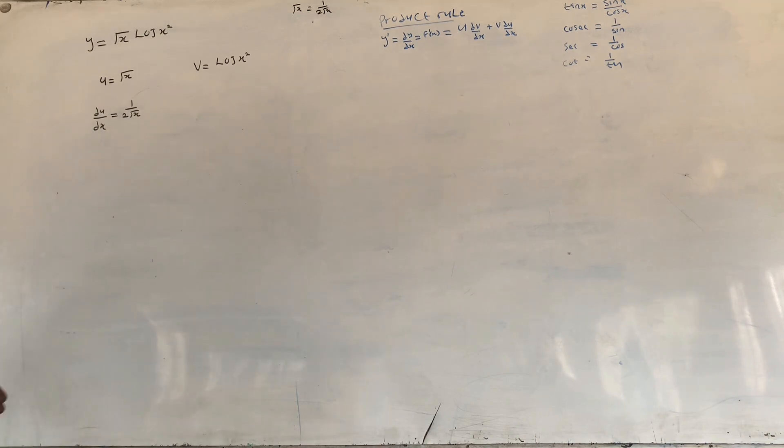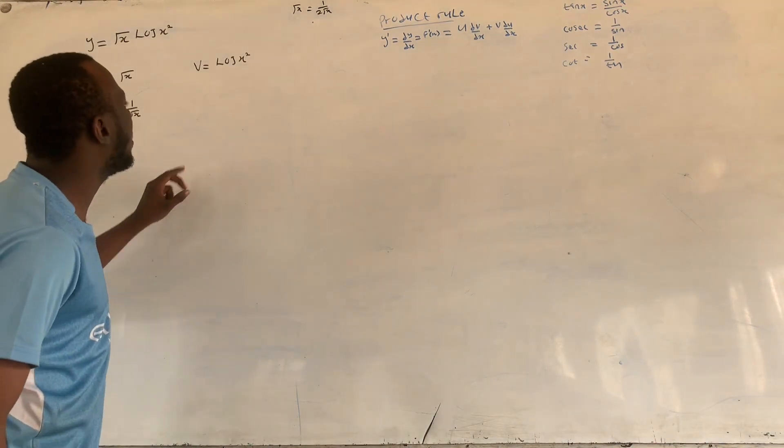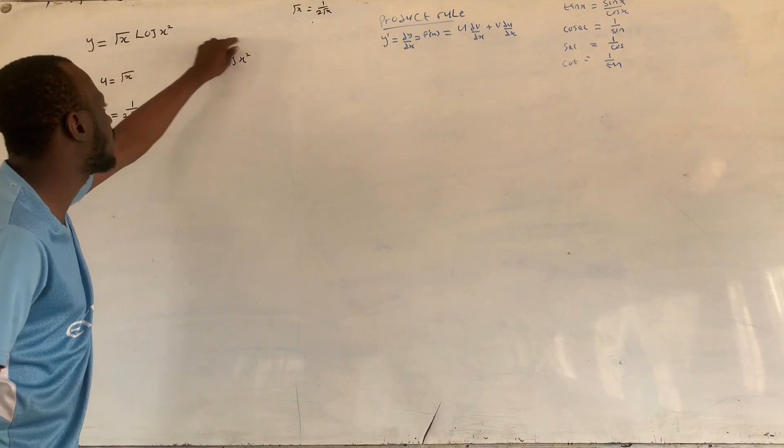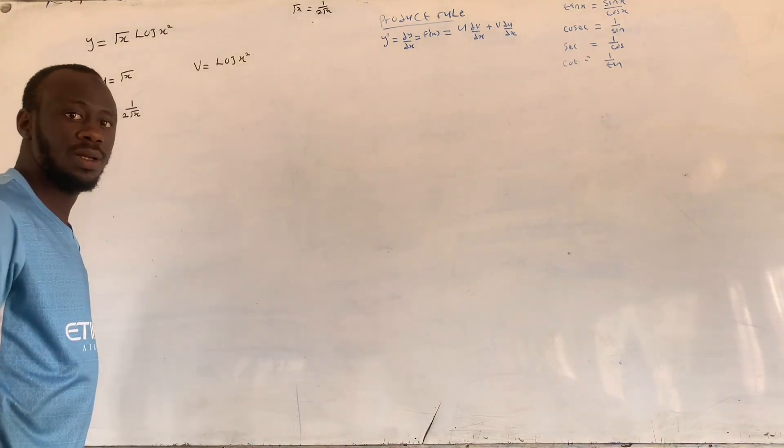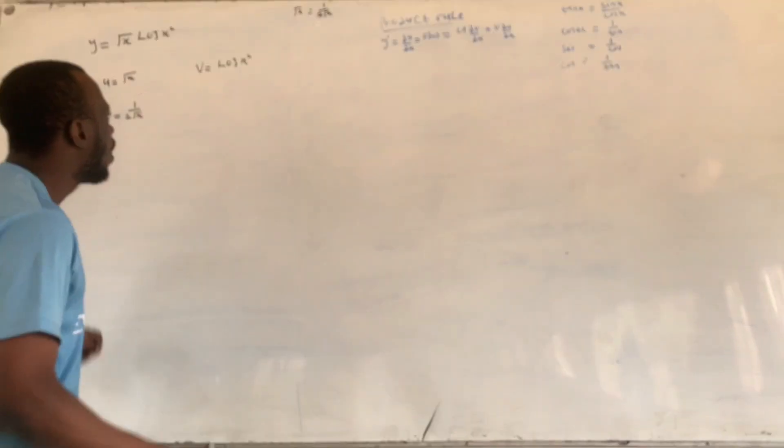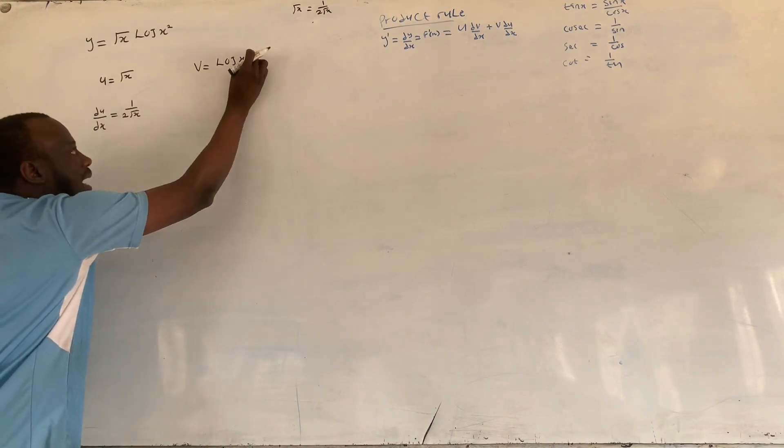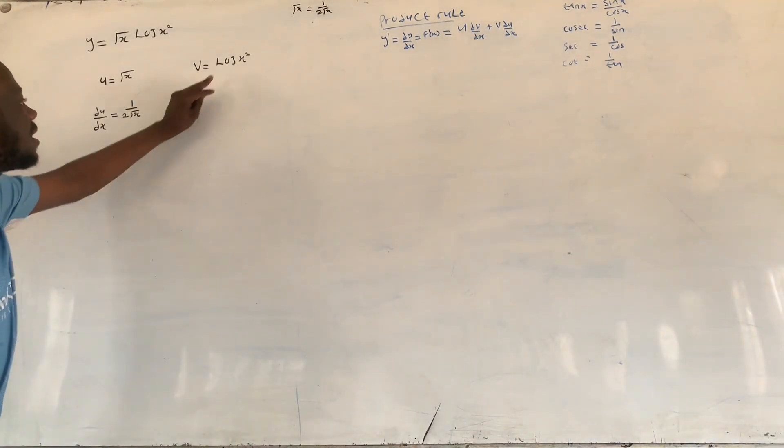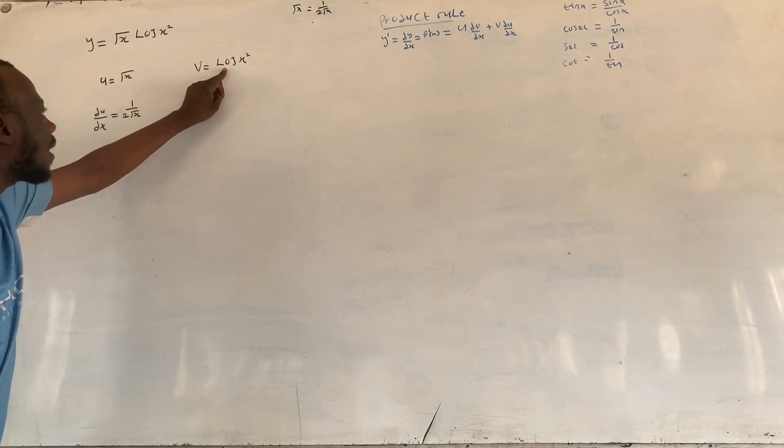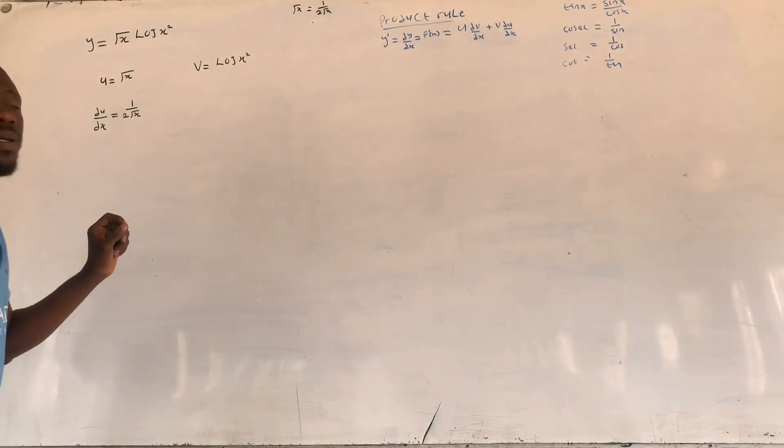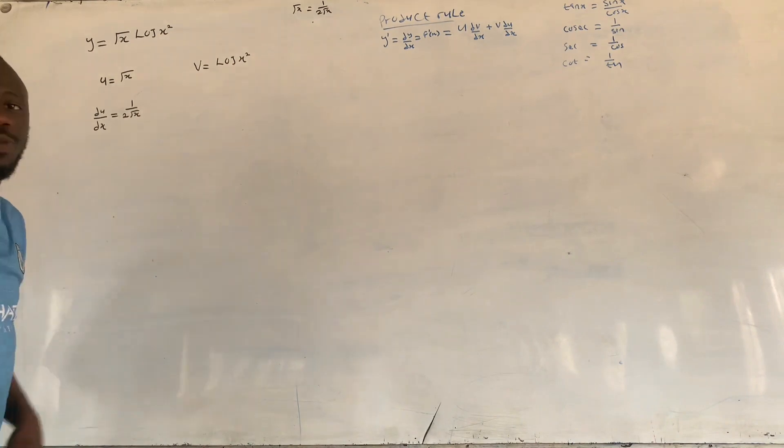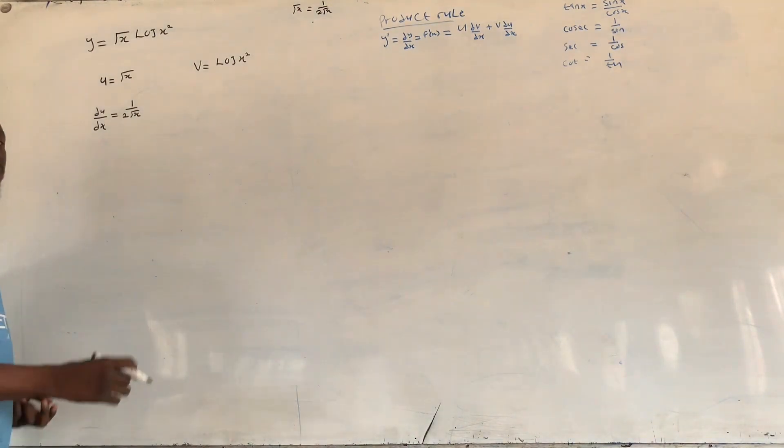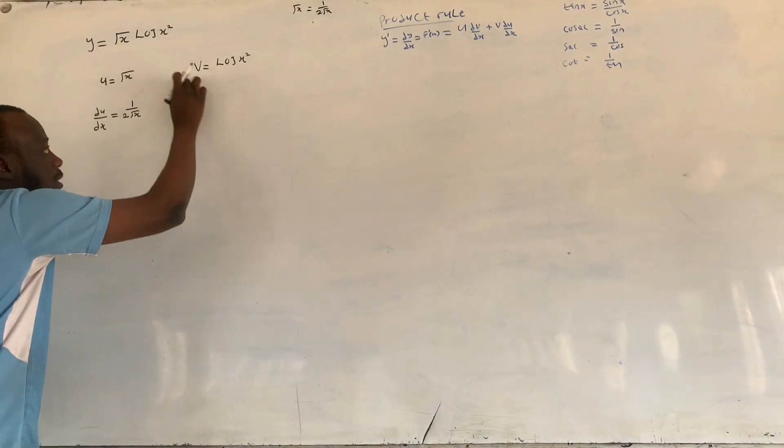Now we have some little issue here while solving this question, because x squared is a function and log is a function. Now in this case, this log x squared becomes function of a function, meaning I want to use chain rule that we did earlier to solve this question.